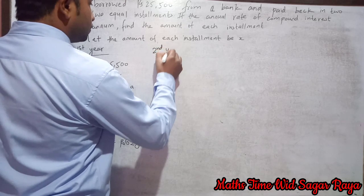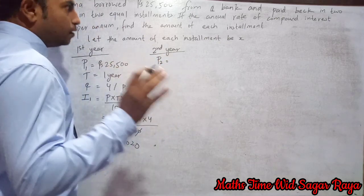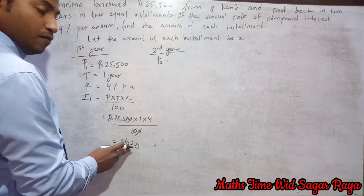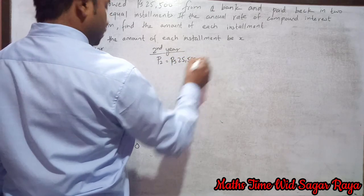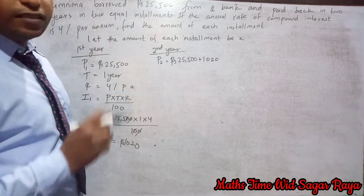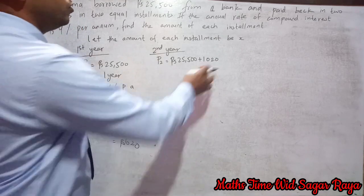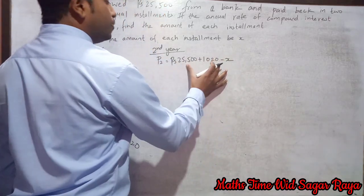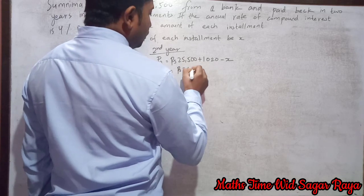For the second year, since compound interest is applied, the principal for the second year will be the first year's principal plus the first year's interest. That gives us 25500 + 1020 = 26520. But after the first year we pay one installment, so we subtract x. The principal for the second year is 26520 minus x.